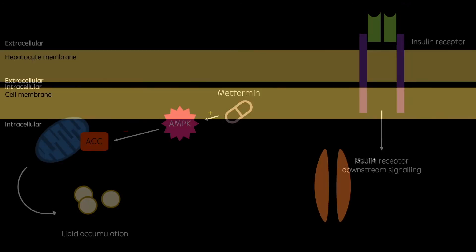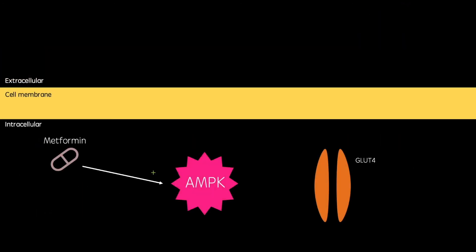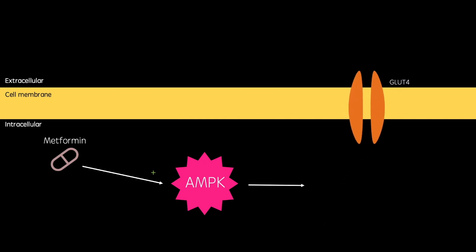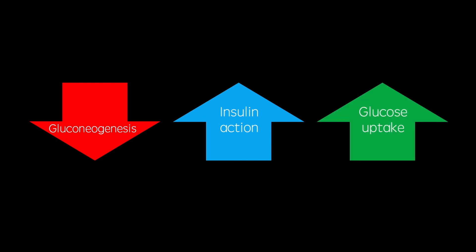And finally, AMPK also promotes the translocation of GLUT4 into skeletal muscle cells, reducing the blood glucose concentration even further. So overall, metformin reduces gluconeogenesis, it increases insulin action, and increases glucose uptake, thus treating the hyperglycemia caused by type 2 diabetes.